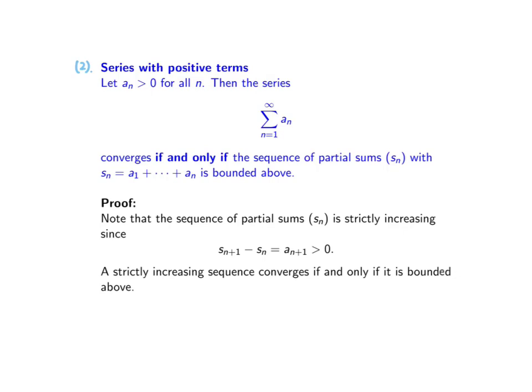In order for the series to converge, we need the limit of S_n as n tends to infinity to converge. Since S_n is a strictly increasing sequence, it converges as long as it is bounded above. Otherwise, this sequence diverges. Therefore, we have the conclusion from the second test.